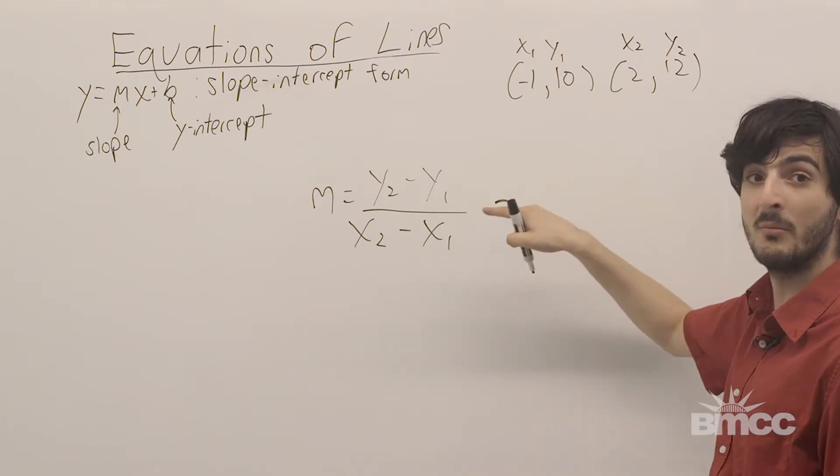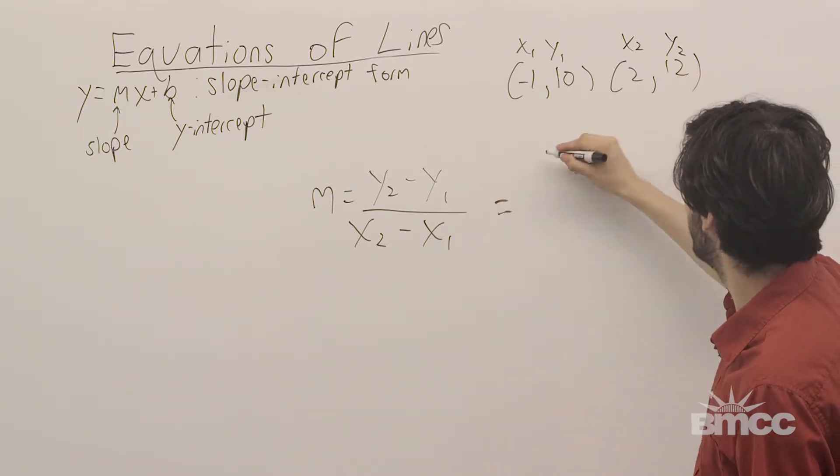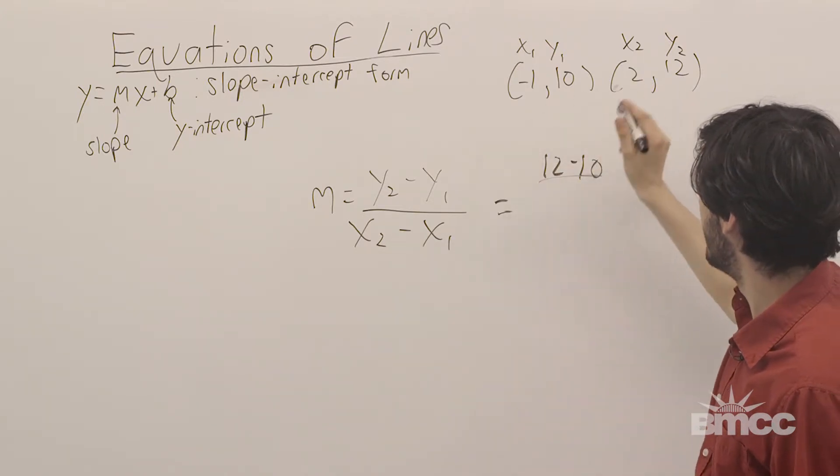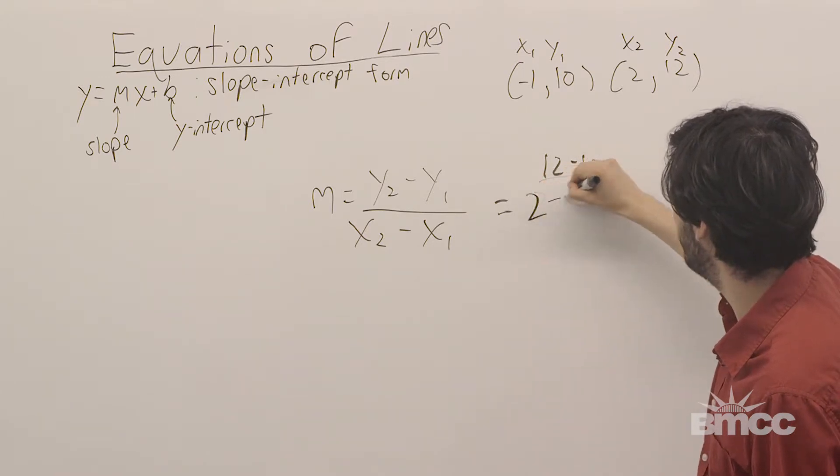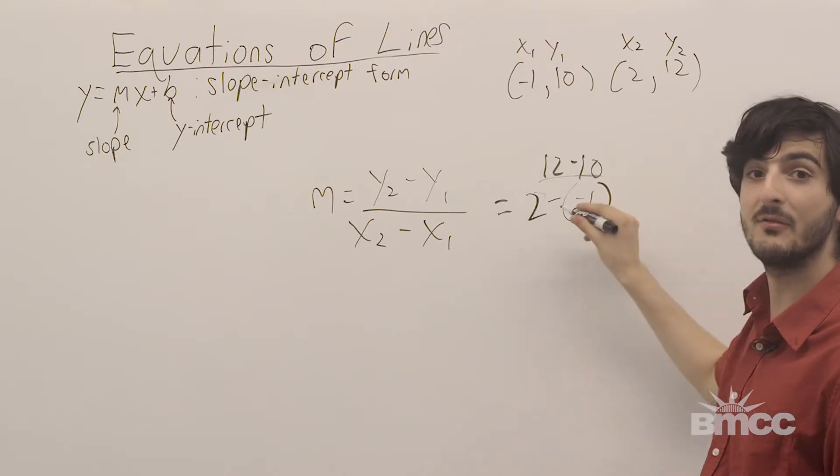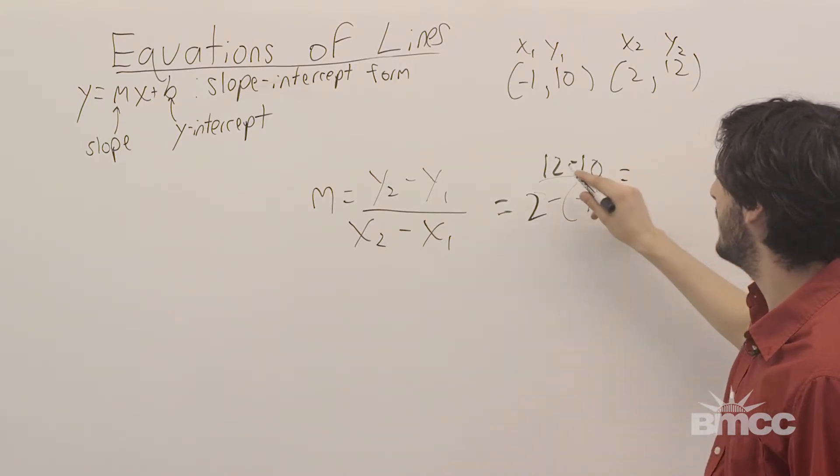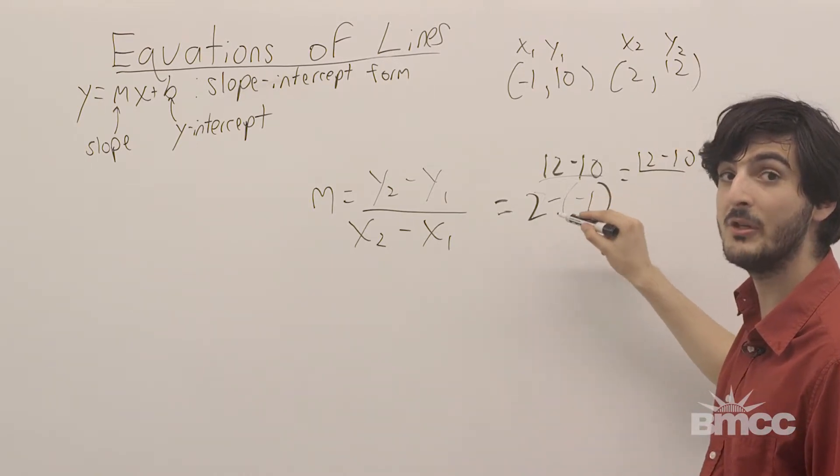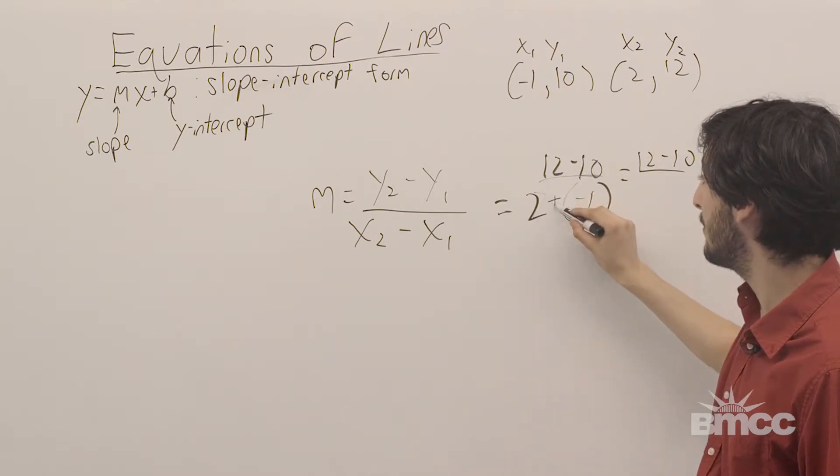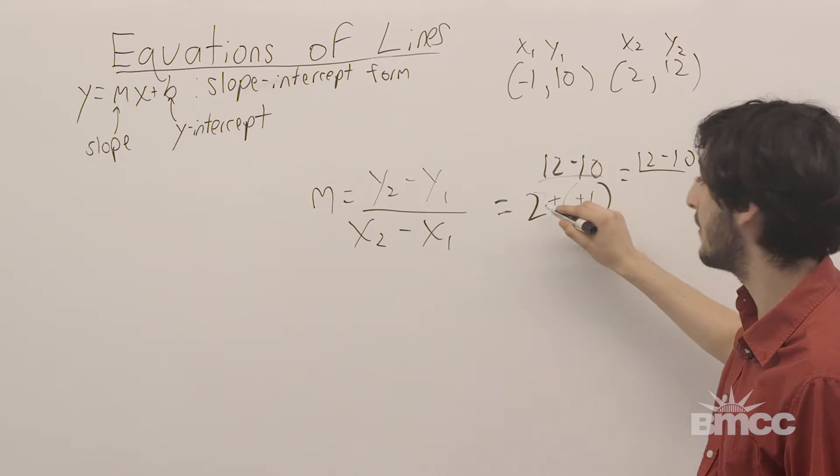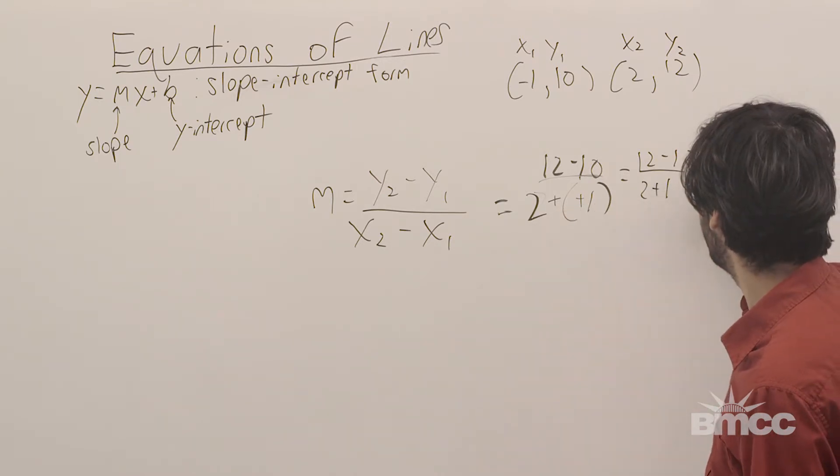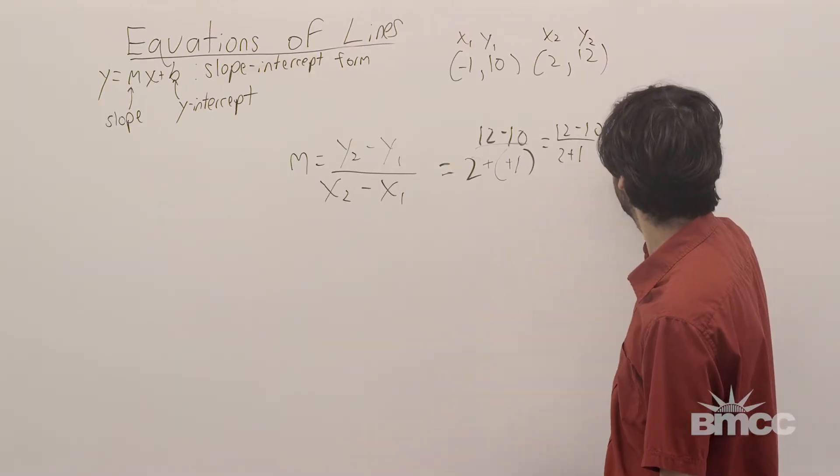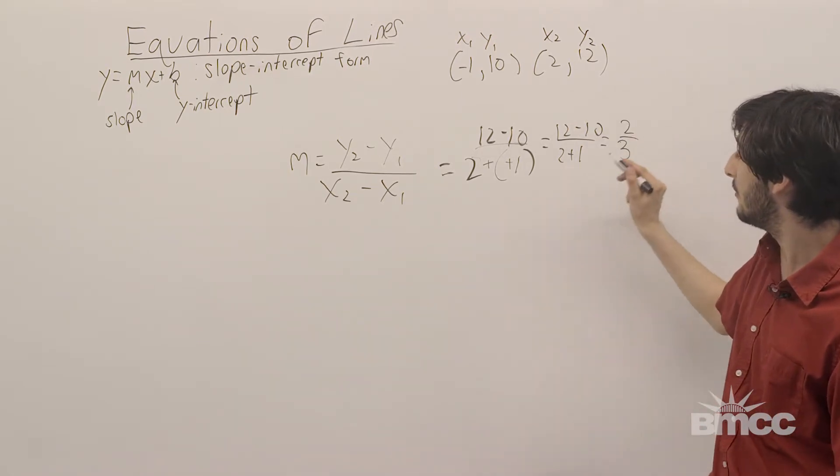So, again, using our formula for slope, we have y2 minus y1, which is 12 minus 10, over x2 minus x1, which is 2 minus, in parentheses, negative 1. You have to be very careful with the signs. So, we have 12 minus 10, over when you have 2 minus negative 1. Whenever you subtract a negative, you flip both to become positive. So, this becomes 2 plus 1. So, 12 minus 10 is 2, over 2 plus 1 is 3. So, our slope is 2 thirds.